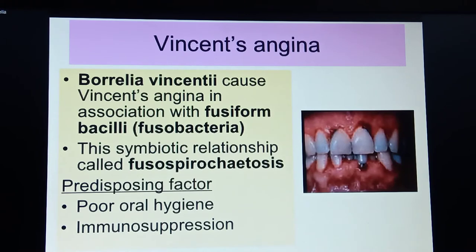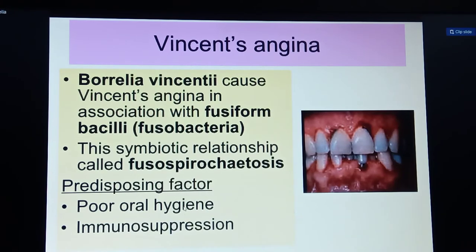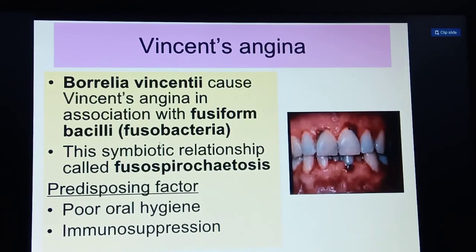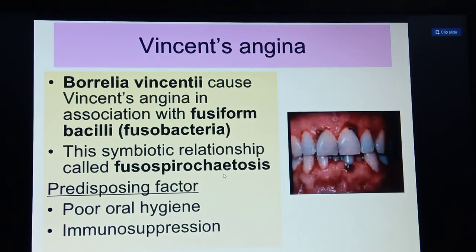The second condition is Vincent's angina, caused by Borrelia vincenti. This condition is associated with fusobacteria — fusiform bacilli, which have a flagella-like structure. It is also called fusospirochaetosis. It mainly affects the oral area, including the teeth and gums, causing gingivitis.